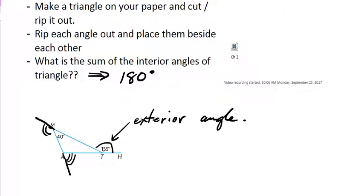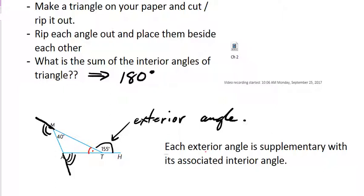Let's explore this a little bit. This exterior angle — how is it related to this particular interior angle right there? Those two angles are supplementary. So each exterior angle is supplementary to its associated interior angle. So these two are supplementary: 40 and this angle right here would be supplementary, and of course this one and this one would be supplementary. So finishing the diagram: 180 minus 155 is 25, so this angle is 25.